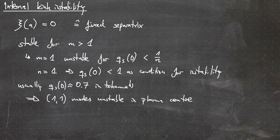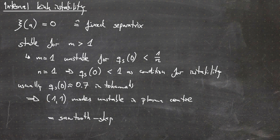These (1,1) modes are generally unstable in typical tokamaks in the plasma center. These modes have a special name: because they have a sawtooth shape in the time traces of temperature and plasma density, they are referred to as saw teeth.